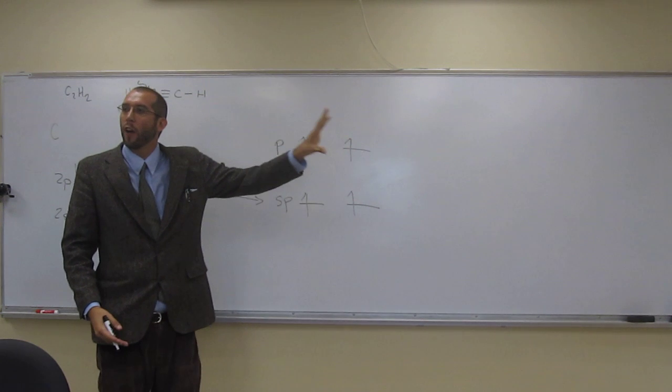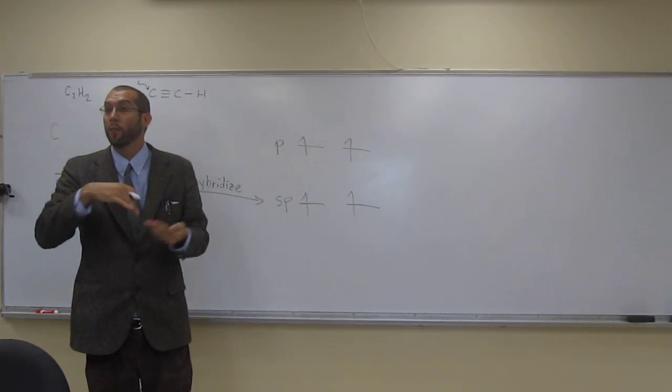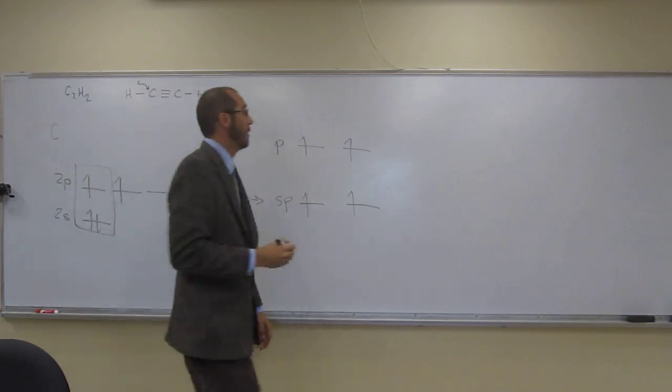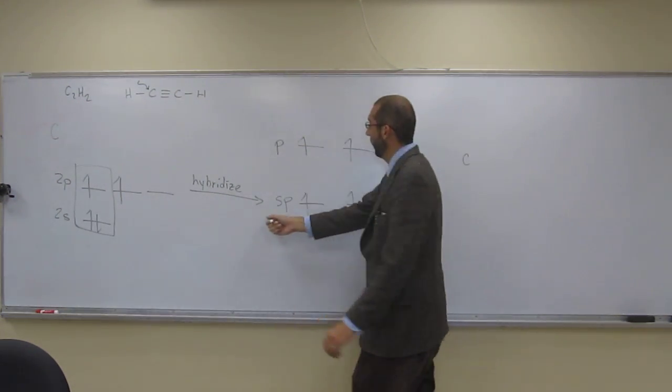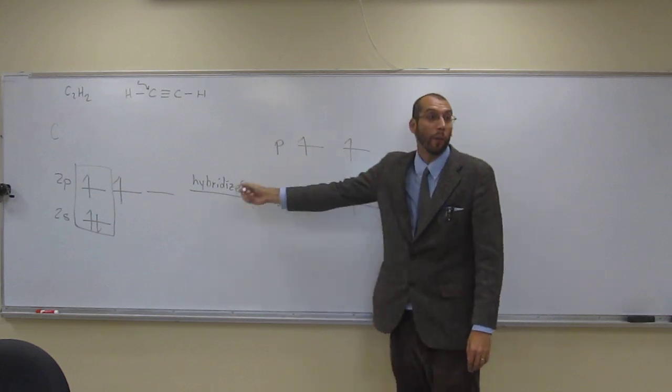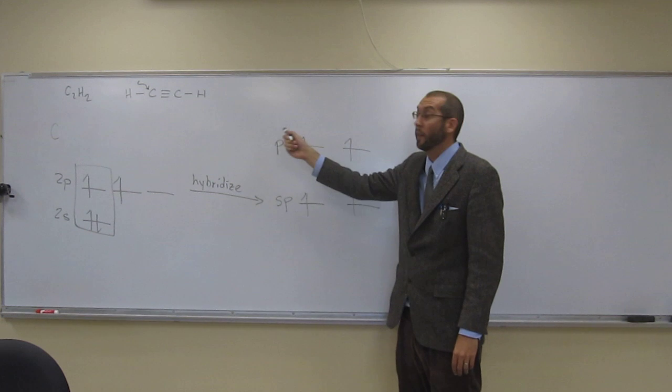So let's go back and draw that Lewis structure again, doing how we do with the fish hook arrows, just to remind ourselves. So remember, these are the sigma bond forming, right? And these are the pi bond forming. These ones here.